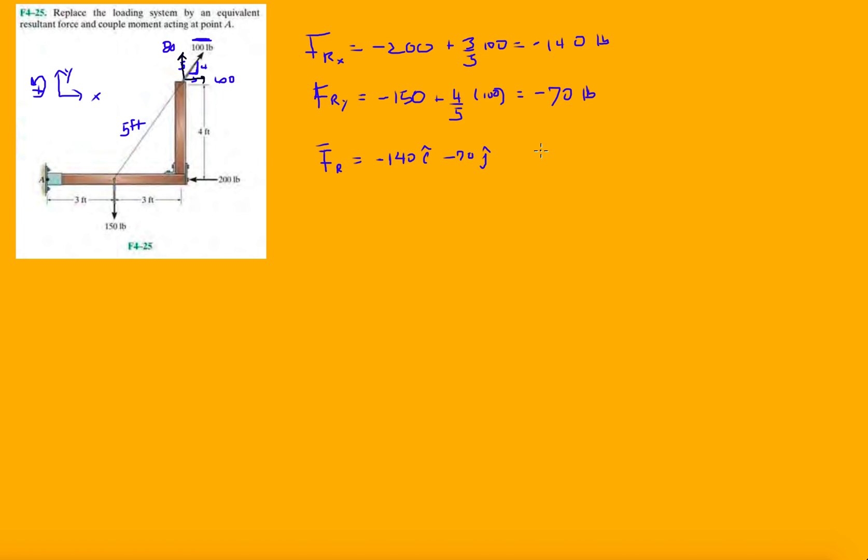My resultant in vector form is going to be -140i - 70j. The direction of it is inverse tan of -70 over -140, which is inverse tan of 0.5. Make sure you're in degrees - you'll get an angle of 26.6 degrees.